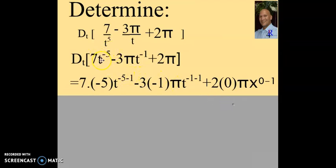So, negative 5 multiplied by positive 7, and then I've got to subtract 1 from the exponent.